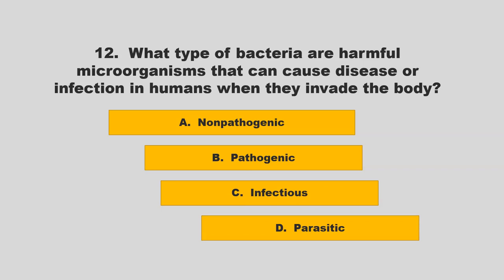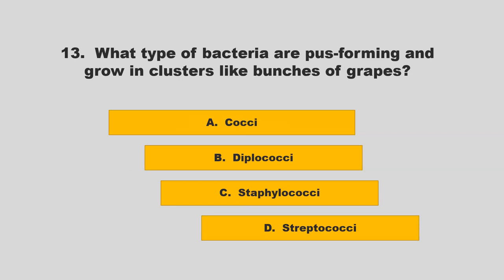What type of bacteria are harmful microorganisms that can cause disease or infection in humans when they invade the body? Options: non-pathogenic, pathogenic, infectious, or parasitic. The correct answer is B: pathogenic.